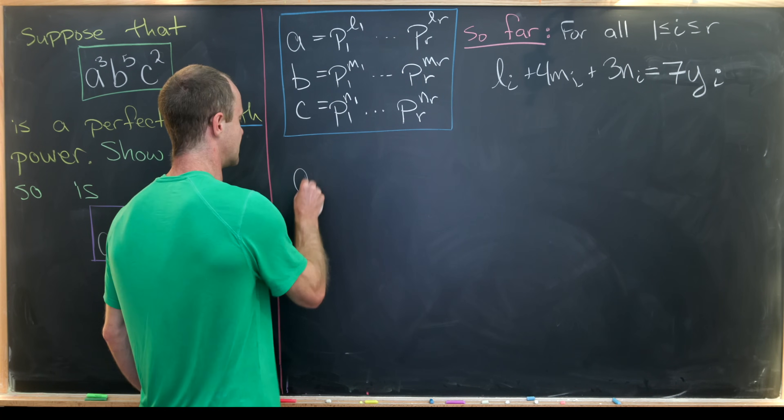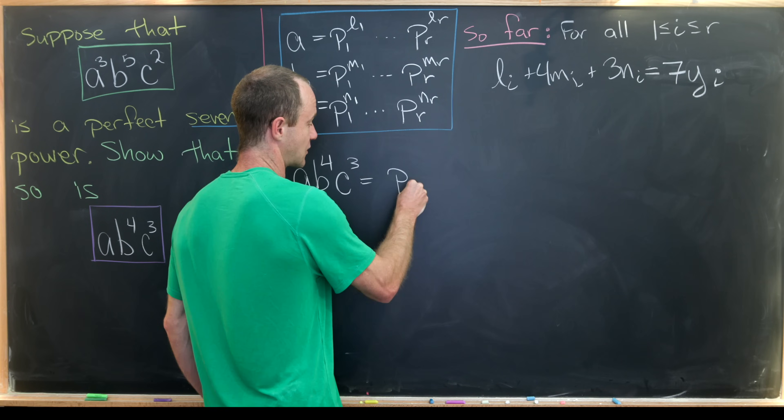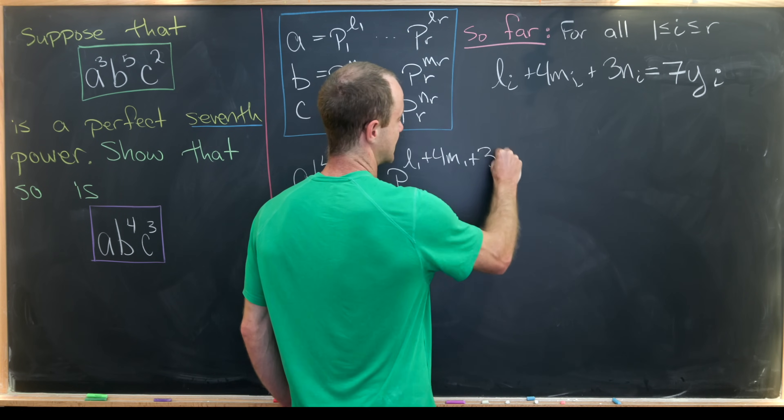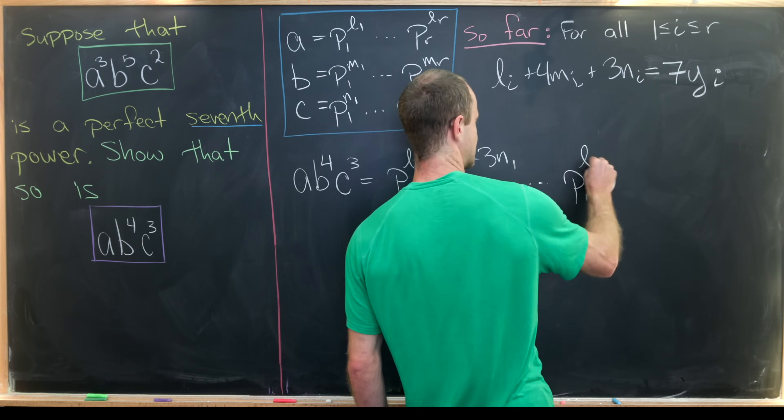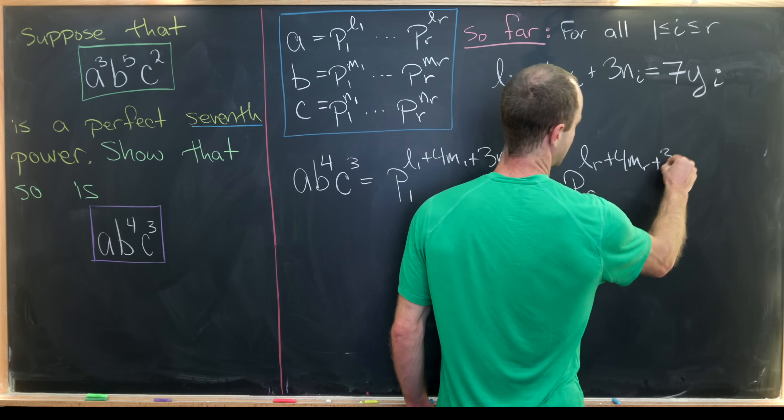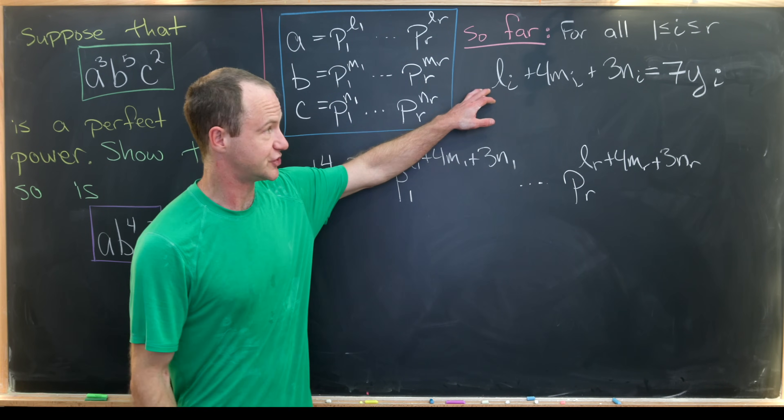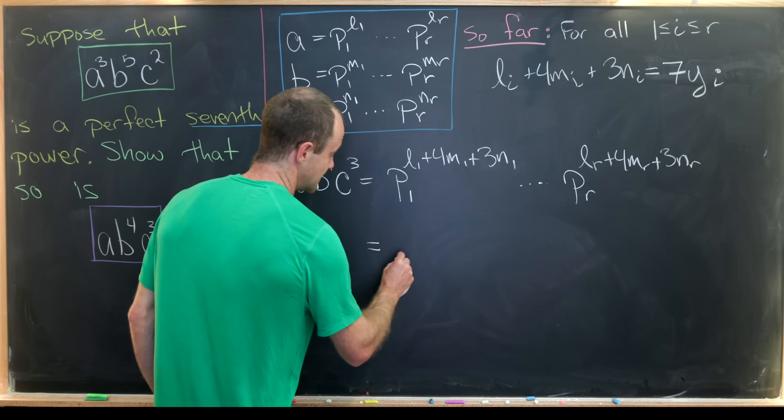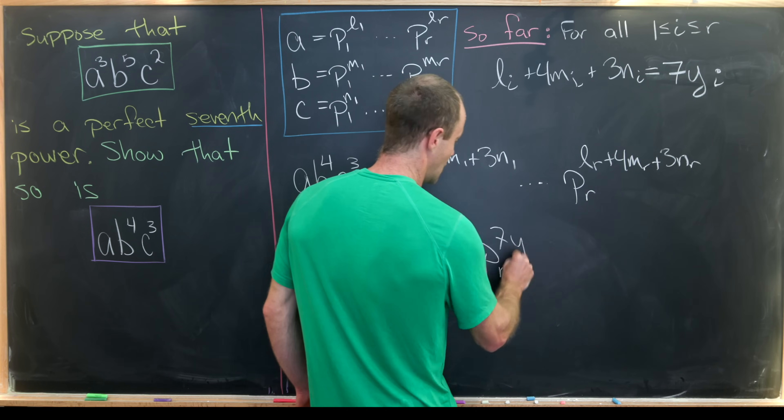but that means that we can take the number a times b to the 4th times c cubed, and rewrite it as this product, p1 to the l1 plus 4m1 plus 3n1, all the way up to pr, to the same thing with just the 1's replaced with r's. So we've got lr plus 4mr plus 3nr. Good. But now, by what we showed on the last board, just tweaked a little bit, we can replace each of these with y's.